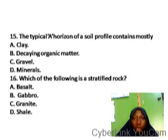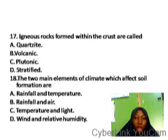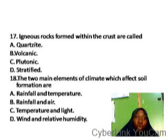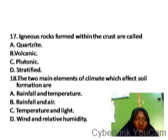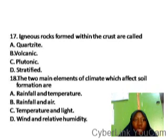Question seventeen: igneous rocks formed within the earth's crust are called dash. Igneous rocks are formed from the eruption of molten magma which solidifies and cools over a long period of time. There are two types: plutonic igneous rock, formed within the earth's crust, and volcanic igneous rock, formed on the surface. So the correct answer is plutonic igneous rock.